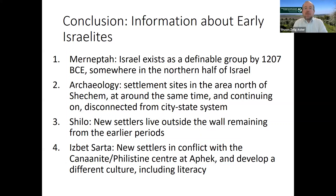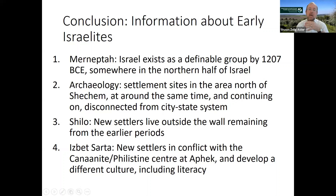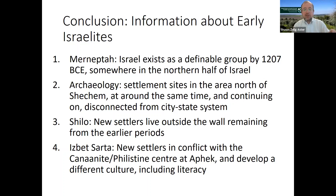In conclusion: Merneptah tells us that the Israelites existed as a definable group by 1200 BCE, somewhere in the northern half of Israel. Archaeology shows settlements north of Shechem disconnected from the city-state system. At Shiloh the new settlers live outside the wall from earlier periods. At Izbet Sartah the new settlers distinguish themselves from the Canaanite-Philistine center at Afek, developing a different culture including literacy — but not the royal scribal literacy of the Canaanites; rather, children at poor sites learning to write.